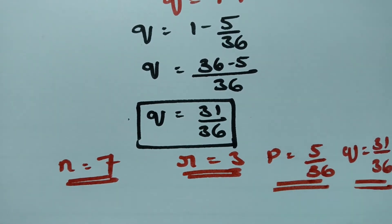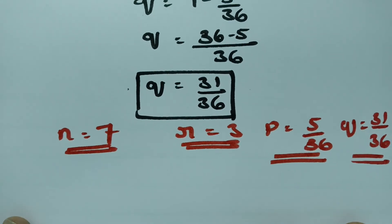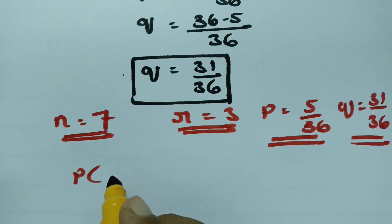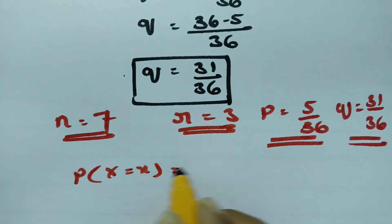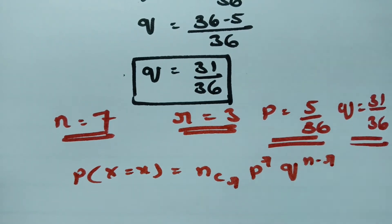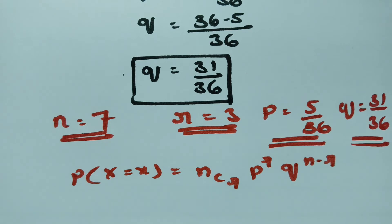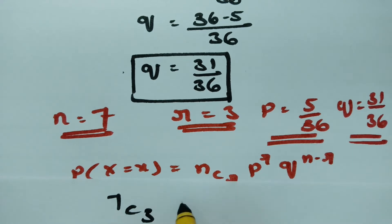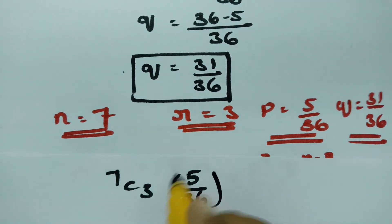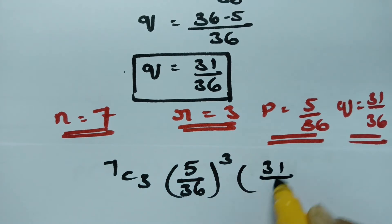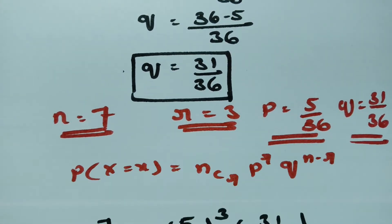Now we apply the binomial distribution formula. The probability of getting sum 6 exactly 3 times in 7 throws is P(X = x) = NCR × P^R × Q^(N−R). Substituting: N = 7, so we get 7C3 × (5/36)^3 × (31/36)^(7−3).